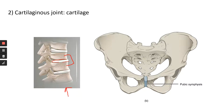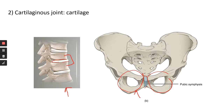The next cartilaginous joint example is the pubic symphysis — in between the two pubic bones, there's a disc of fibrocartilage. Cartilaginous joints can move, but only slightly. Think about your spine — you can do some movement, it allows you to move a little bit. For the pubic symphysis, especially when a woman gives birth, it can open up a little bit.